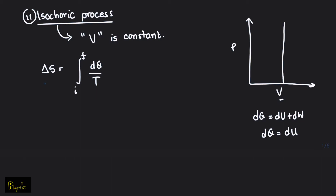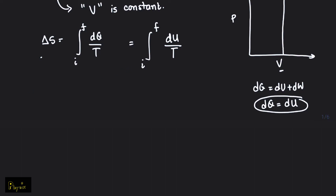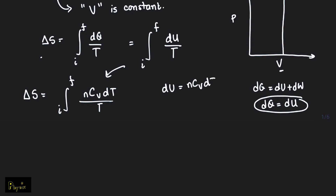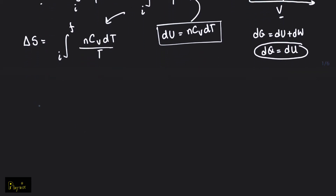So we can write the change of entropy accordingly. Delta S is the integral of du over T. This is because du is equal to nCv dT. So delta S is the integral of nCv dT over T. Since n and Cv are constants, doing some basic calculus, delta S equals nCv ln(Tf/Ti).